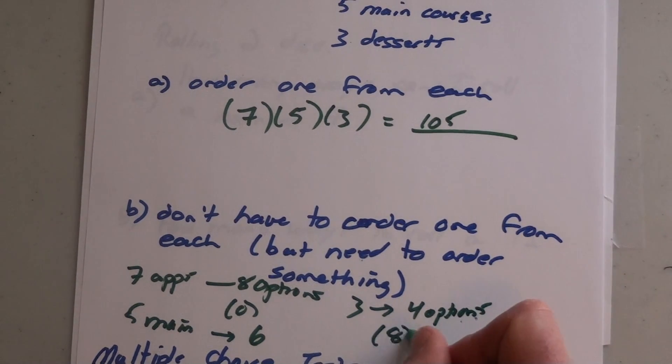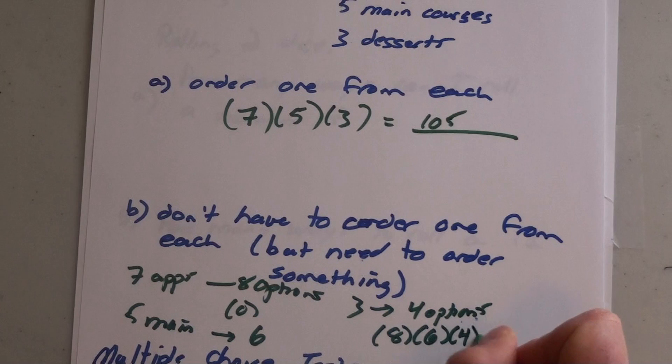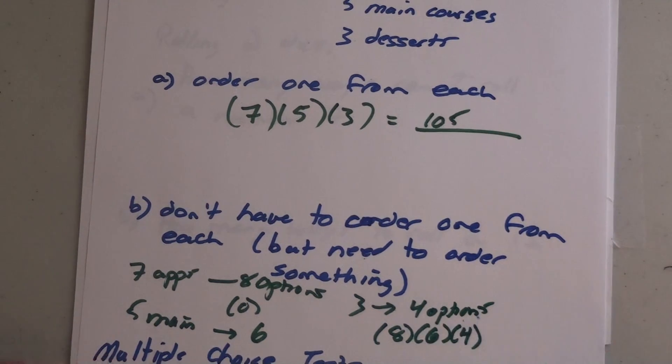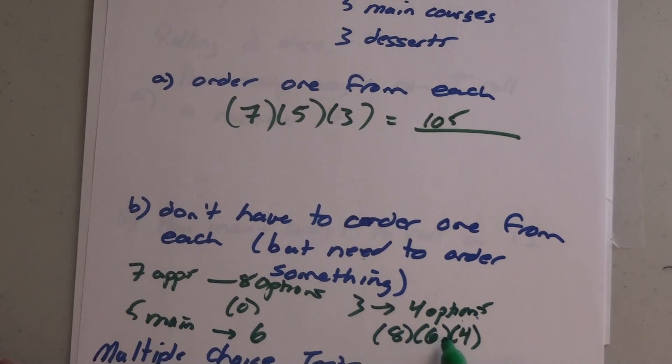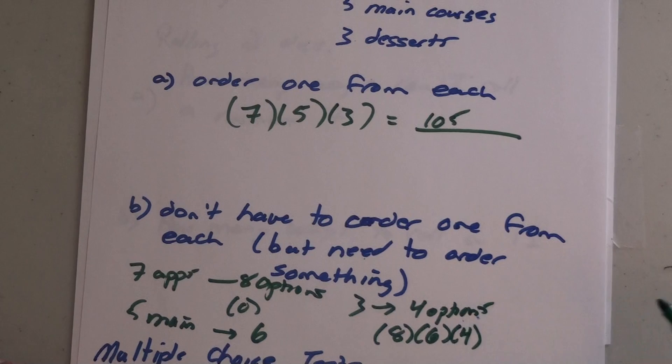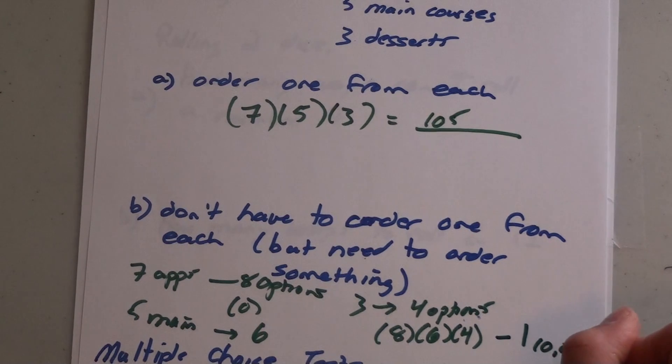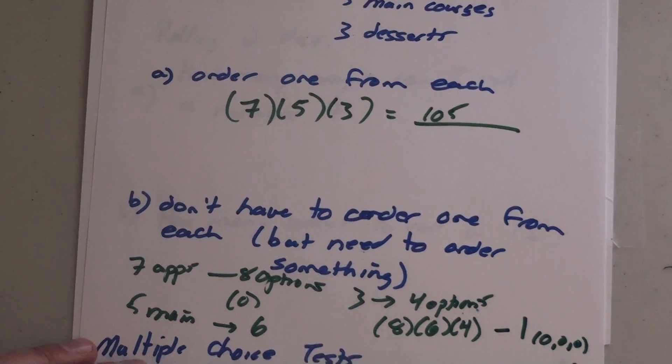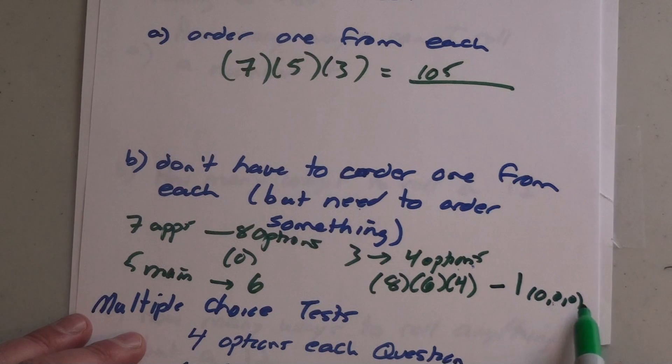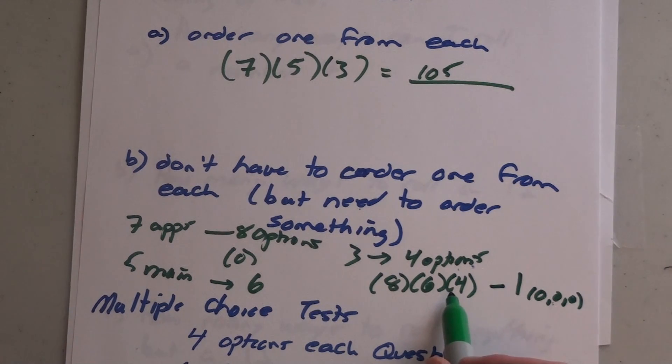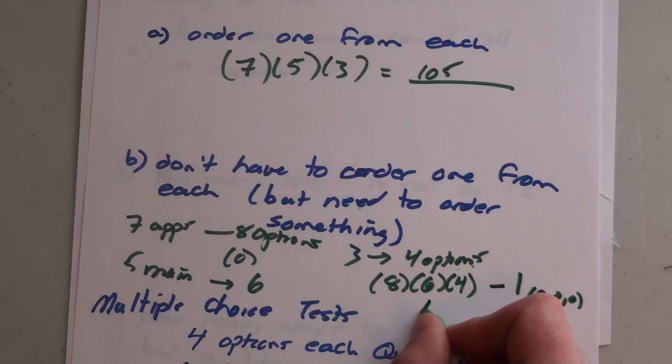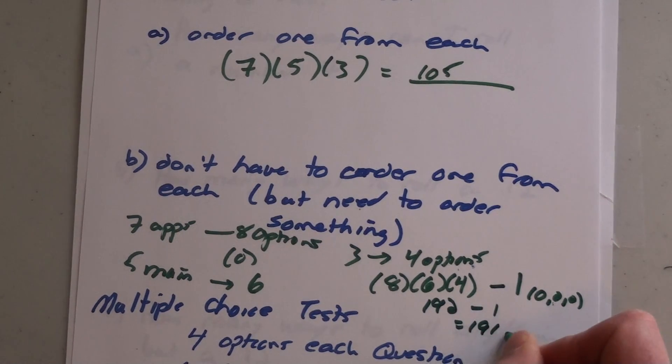So you would have now eight times six times four - you multiply that, having increased by one because you had the option of not ordering one of those things. But then you're going to have to subtract one away, and that one option is if you ordered nothing, which you can't do - you go in a restaurant, you're going to have to order something. So eight times six is 48, 48 times four is 192, subtract one is 191 total options.